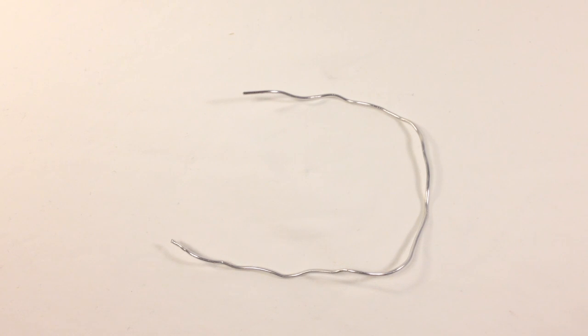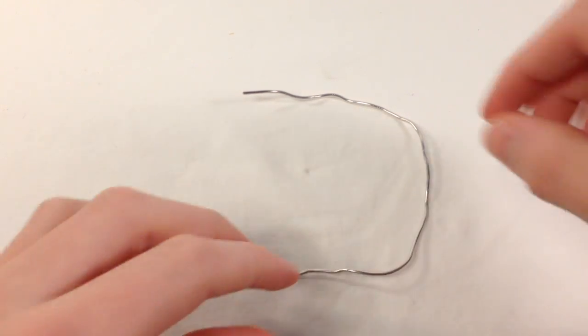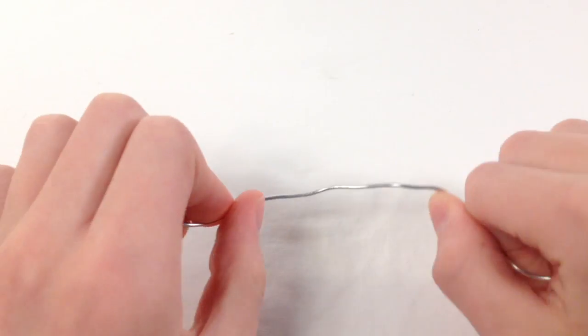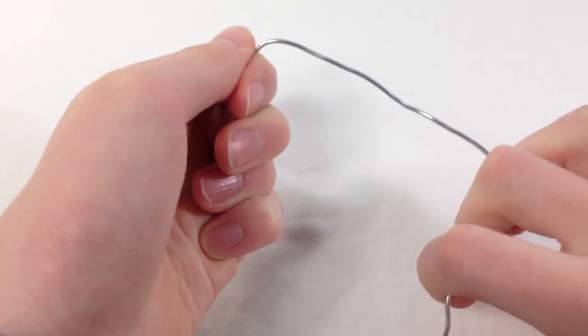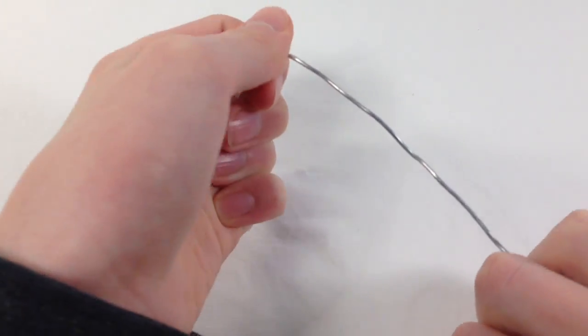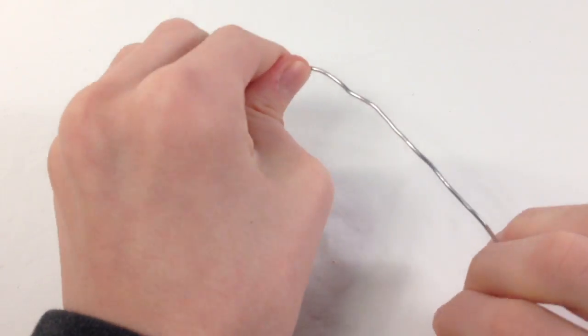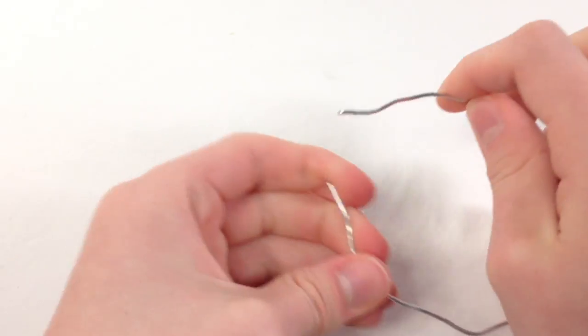When an object can bend, it's called plasticity. For example, wire. You can take this and you can just bend it any way you want to and it won't spring back like the spring, so it won't take its original shape again.